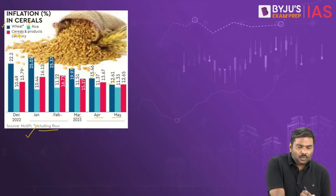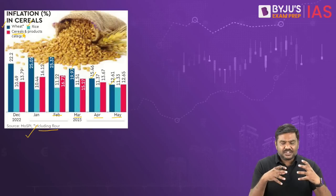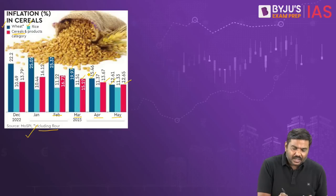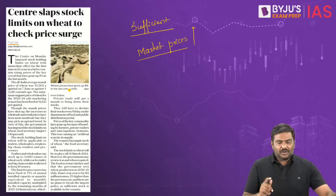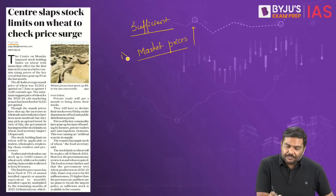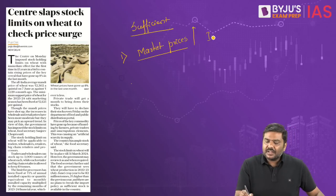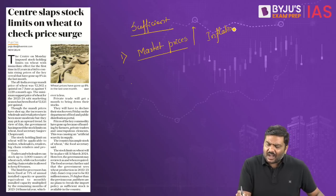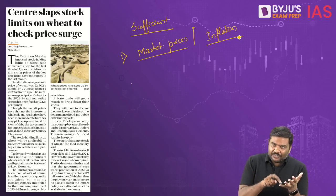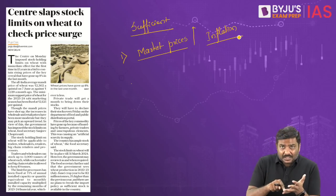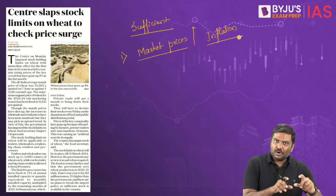Even the cereal inflation rate — covering all these crops — has been in double digits, which is a cause of concern for the Government of India. So the first point to understand is that inflation is already high in the domestic market, specifically wheat inflation, inflation in pulses, and inflation in cereals. We are specifically talking about wheat here.